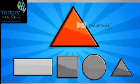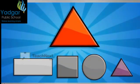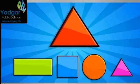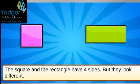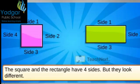A triangle looks like this. To find another triangle, look for the shape that looks the same as the one given. The square and the rectangle have four sides, but they look different. Can you say why?